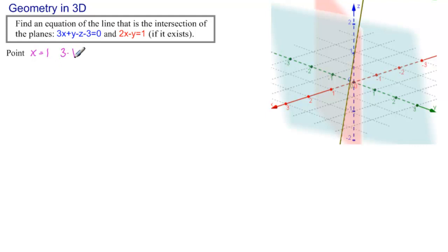Here we would have 3 times 1 plus y minus z minus 3 equals 0. And 2 times 1 minus y equals 1. This is a system of two equations and two unknowns, and it will have a solution, hopefully. So let's look. We have 3 plus y minus z minus 3 equals 0. And 2 minus y equals 1.